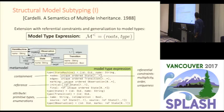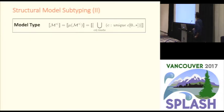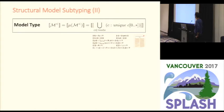We are extending the notation currently used by providing support for containment references and for references, and we are adding referential constraints including multiplicity, order, uniqueness, and bi-directionality. For us, a model type is the union type formed by all the types associated with the root class names of the metamodel, defined with a number of equations included in the paper.